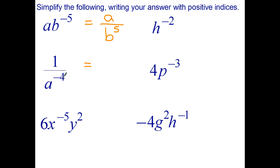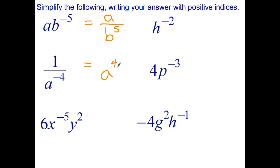What if your negative power is already in the denominator? We'll just take the reciprocal of that. So 1 over a to the negative 4 — we change it to positive — that becomes a to the positive 4. So 1 over a to the negative 4: take the reciprocal and change it to positive, and it becomes a to the positive 4.